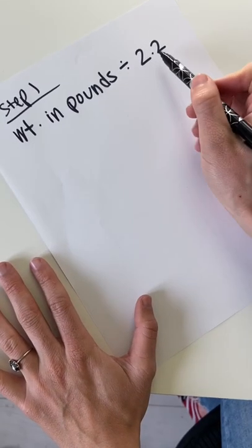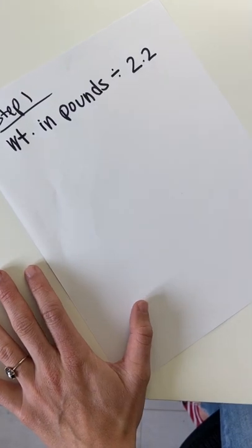Here's how you can tell how much protein you need a day. First, take your weight in pounds and divide it by 2.2. This is your weight in kilograms.